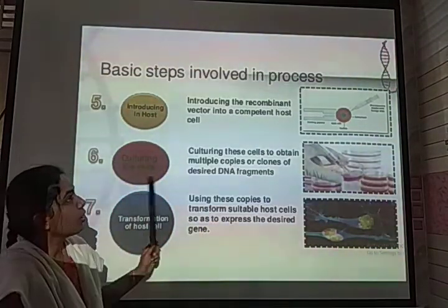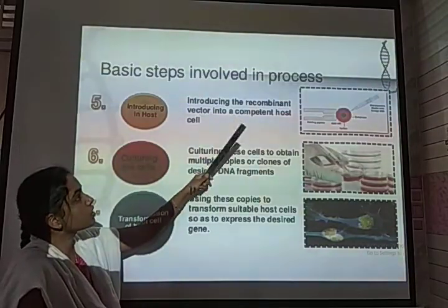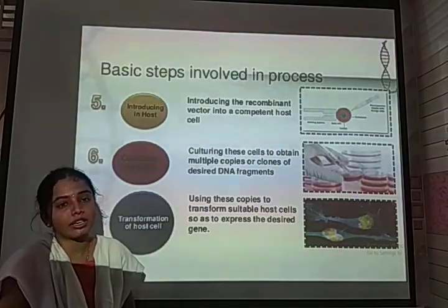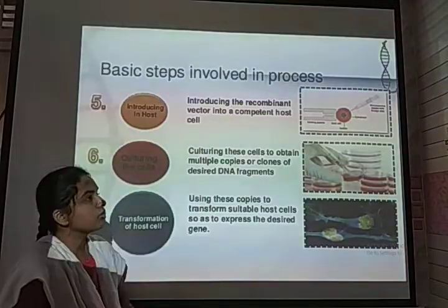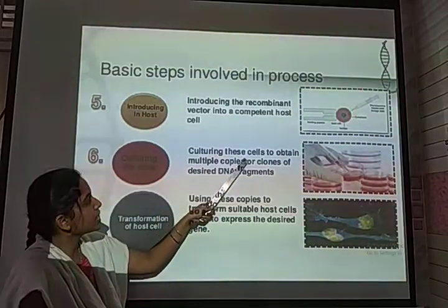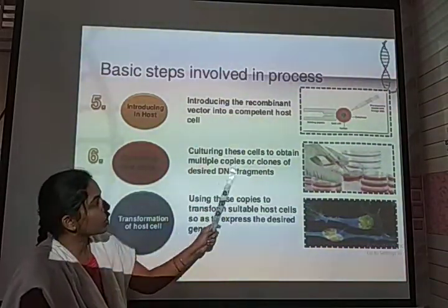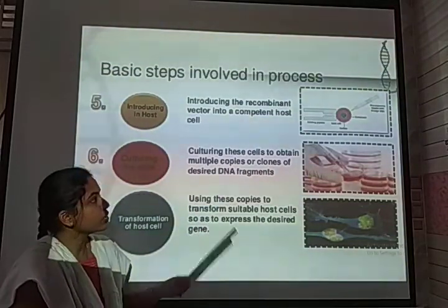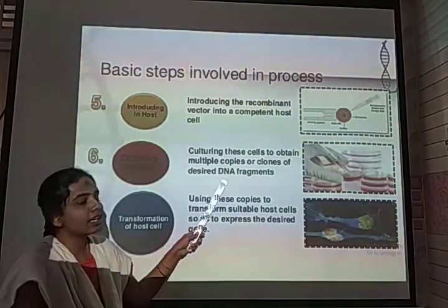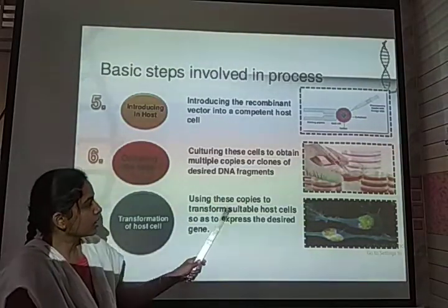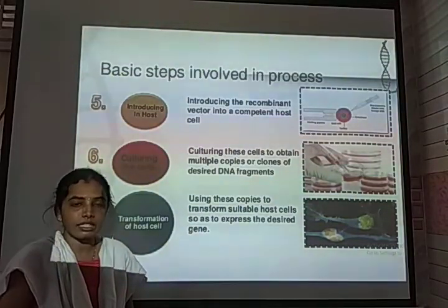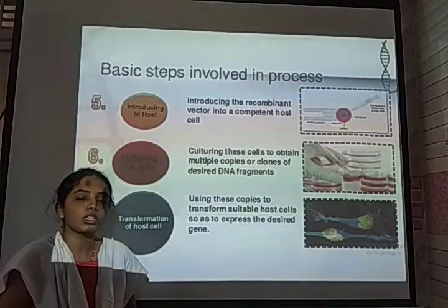The vector, along with the desirable gene, is introduced into the competent host. The host is a cell where the desired gene along with the plasmid undergoes a replication mechanism. Bacterial cells are commonly used in this biotechnological process for multiplication. The next step is culturing these cells to obtain multiple copies or clones of desirable DNA fragments. A replica plating method is used for multiplying the copies of a desired gene in microbes. Using these copies, they transform a suitable host cell to express the desirable gene, which then starts to produce good products.